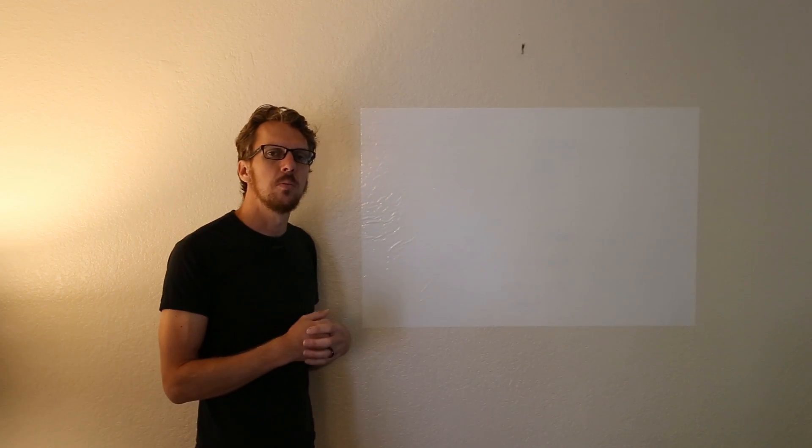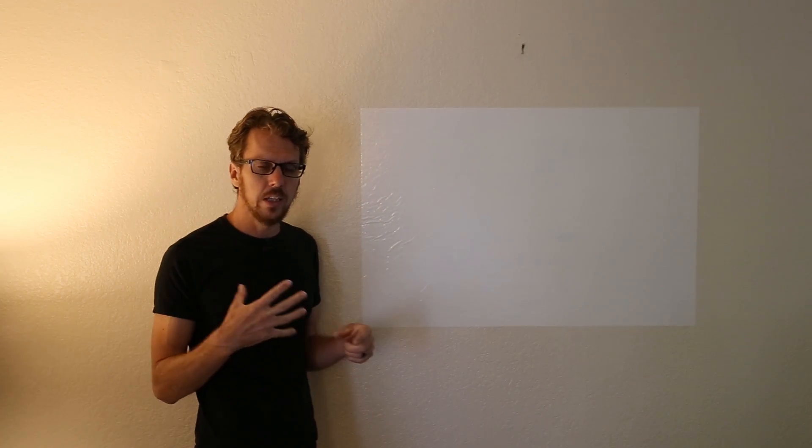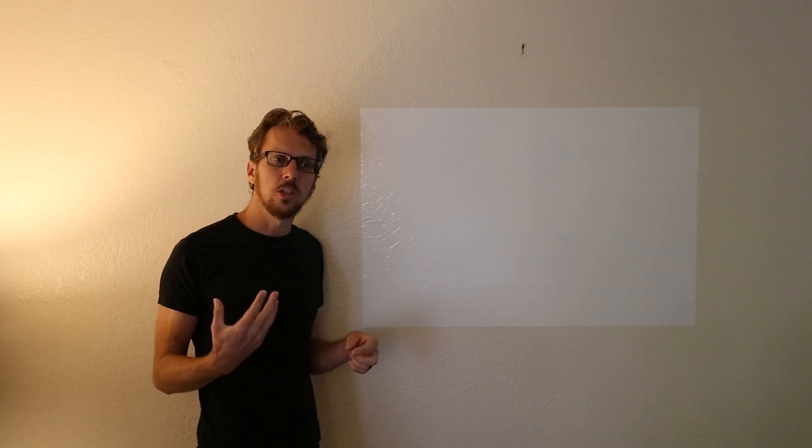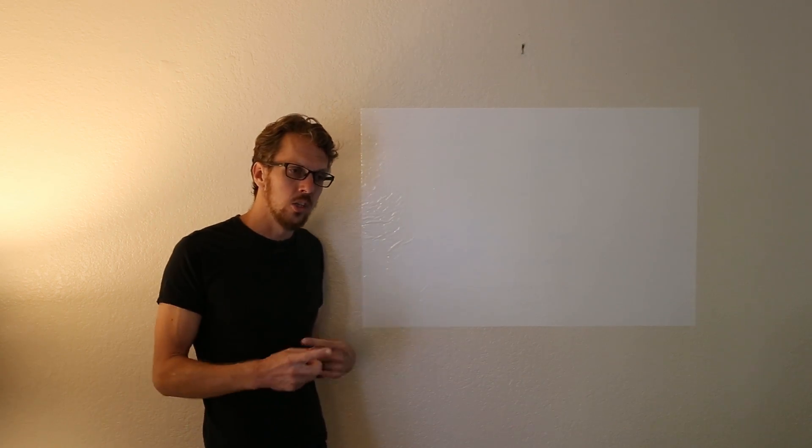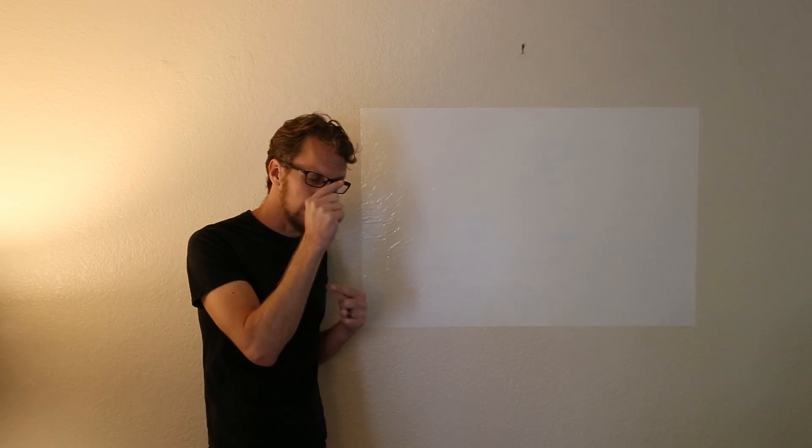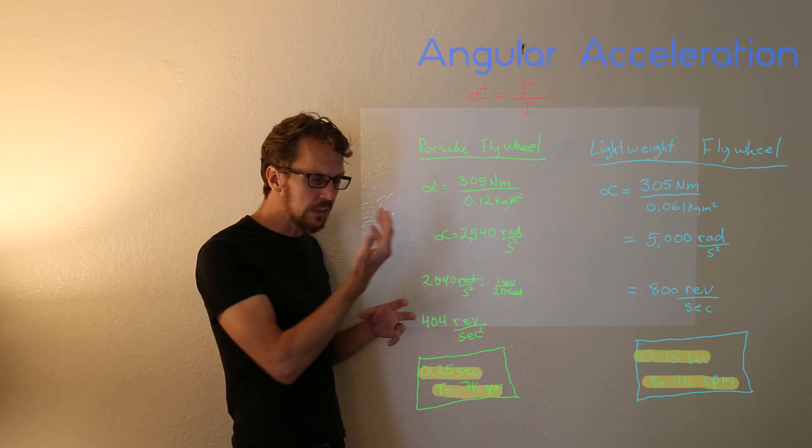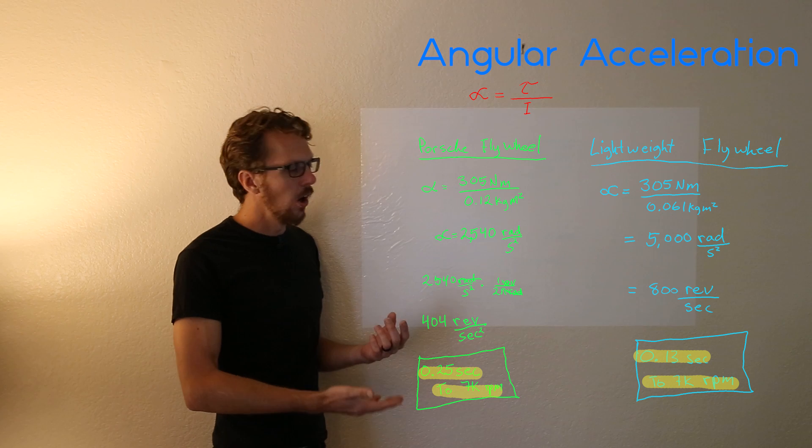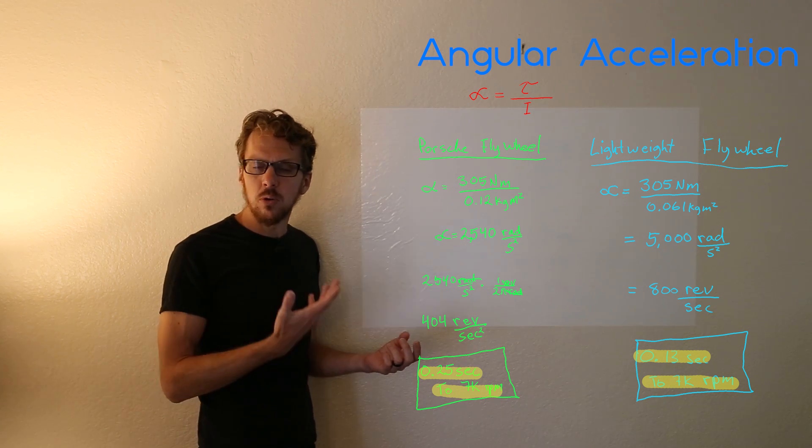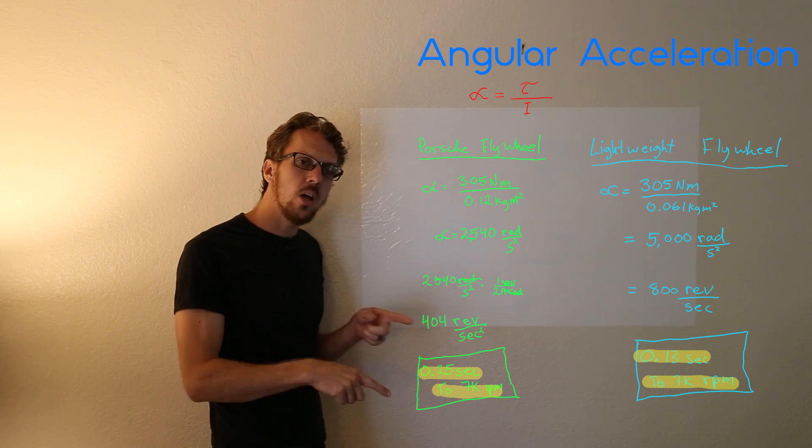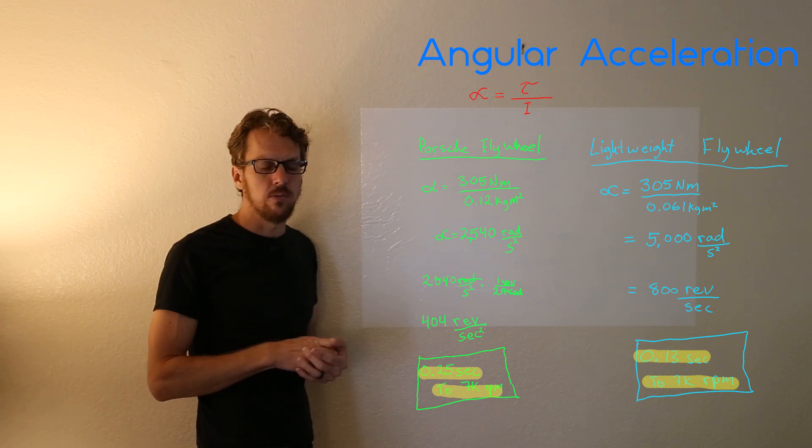So once we have the inertia mapped out in our equations the next step is to calculate angular acceleration. Now angular acceleration is basically just how quickly you can speed up the spinning of a disc or a wheel or anything like that. These calculations here are just to demonstrate that the Porsche flywheel will speed up slower than the lightweight flywheel.